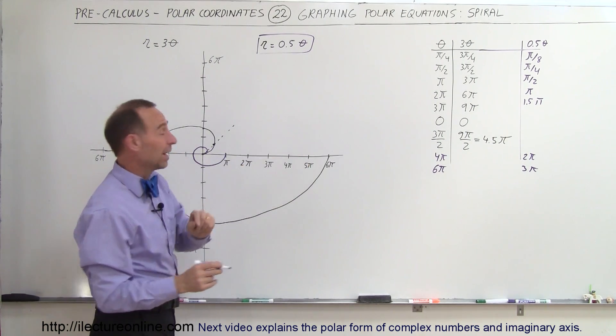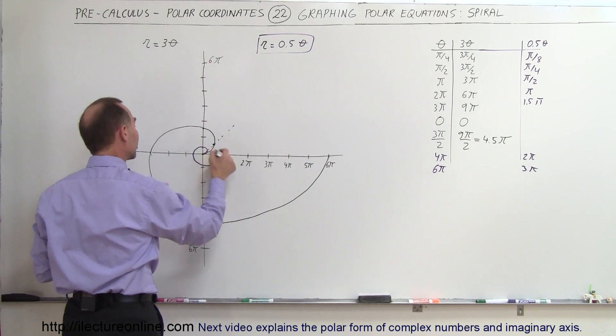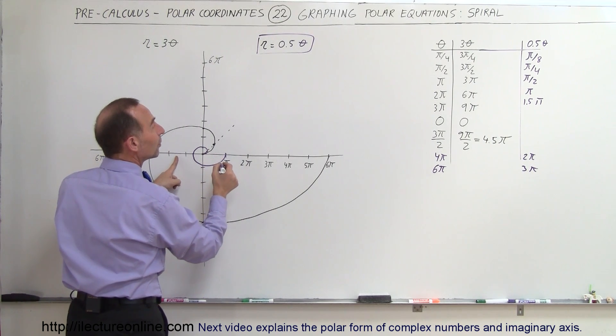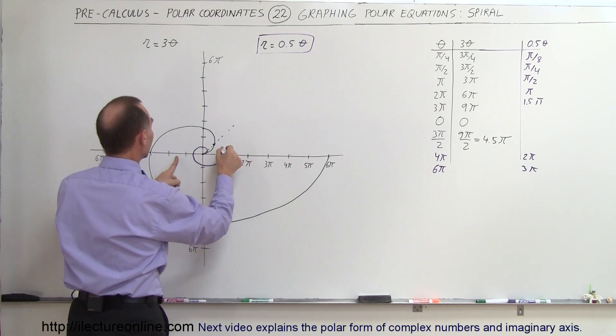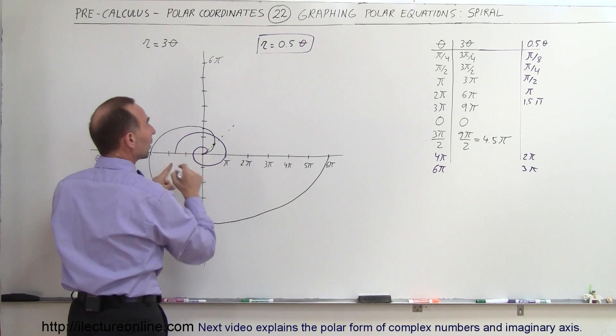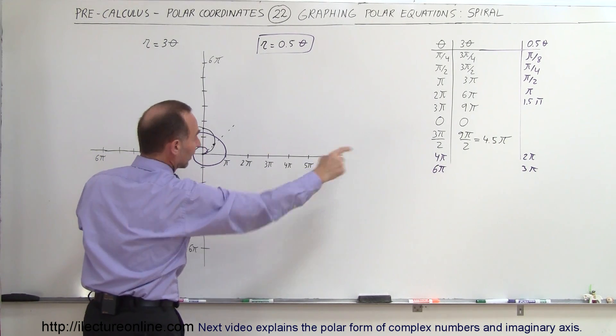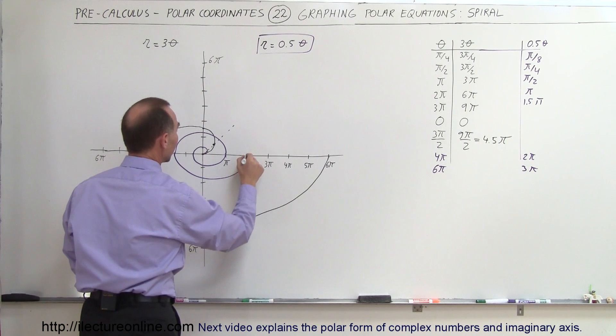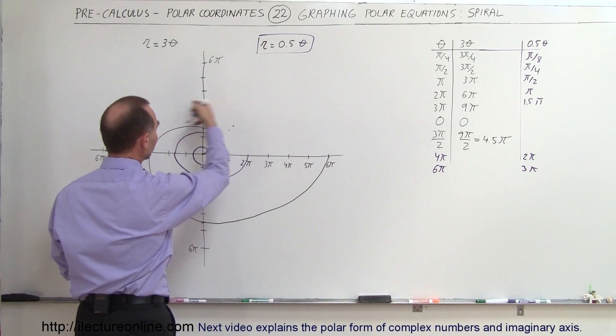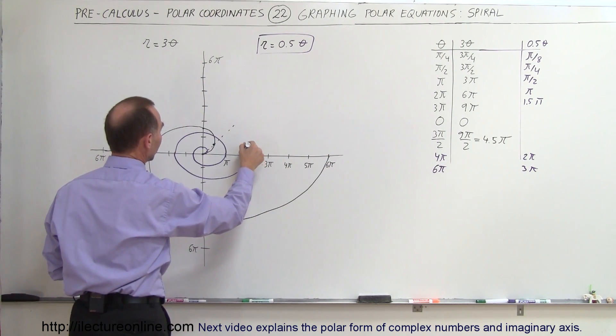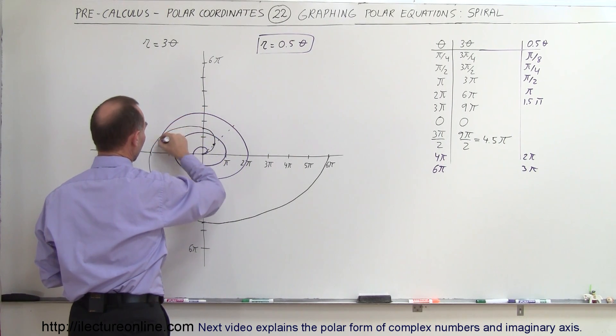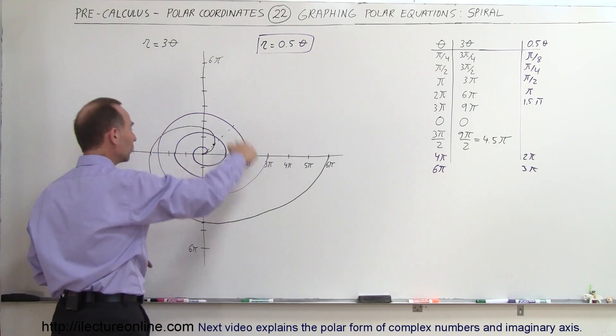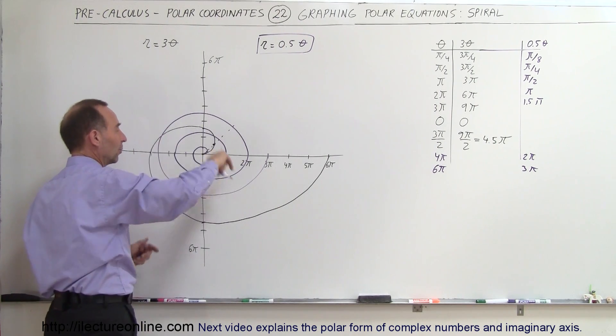At 3π, we have 1.5π. So now we have 1.5 circles. Now we get to the point of 1.5π, so we'd be right over here somewhere. At 4π, r would be 2π, so continue on like this. And at 6π, it would be equal to 3π. So we'll do one more complete circle, and we'll just continue to go outward.